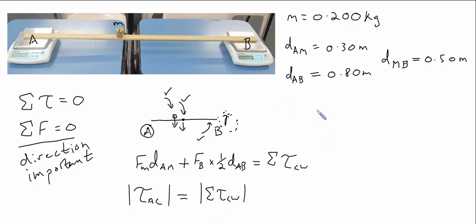Let's start putting in some numbers. The force of the mass is 0.2, I'm just going to ignore those extra two zeros at the moment, times negative 9.8 meters per second squared, times a distance AM of 0.3, plus the force of the bridge. The mass of the bridge is 0.1 kilograms. So that's 0.1 times negative 9.8 times half times d_AB. d_AB is 0.8, so that's going to be 0.4.